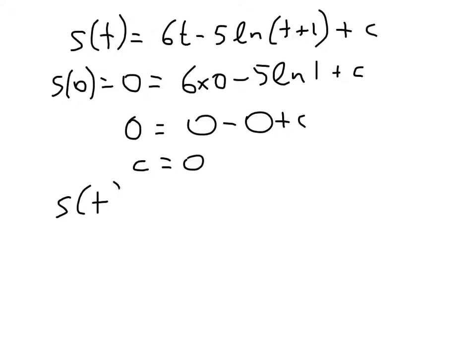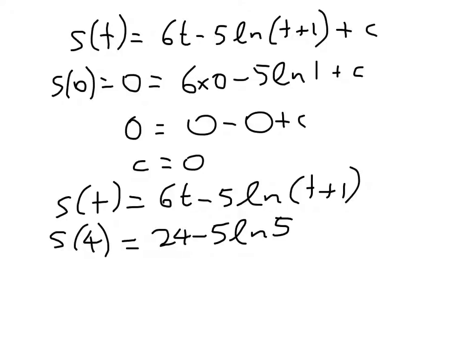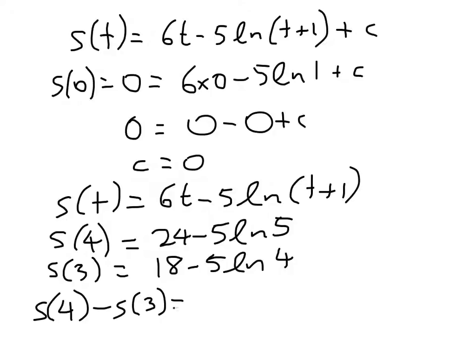And s of t is simply 6t minus 5 log t plus 1. Now we can just substitute in s of 4, which works out to be 24 minus 5 log 5, and s of 3, which is 18 minus 5 log 4. Now you can get two separate numbers for those, if you want to use your calculator, or you can do what I did and work out that that equals 6 minus 5 log 5 plus 5 log 4.